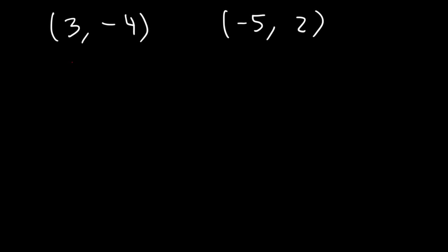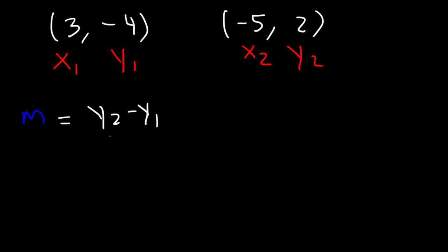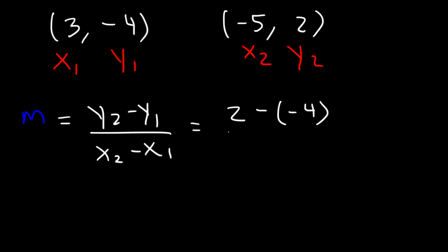What I like to do is identify the x and y variables. Now let's use the formula. So the slope is going to be y2 minus y1 divided by x2 minus x1. The second y value is 2, the first y value is negative 4. Then divided by x2, which is negative 5, minus x1, which is positive 3.